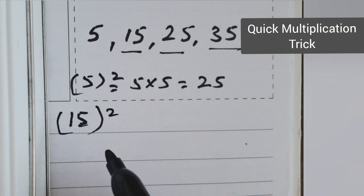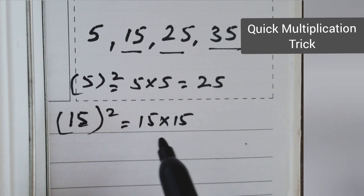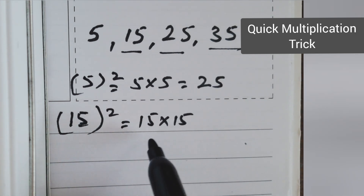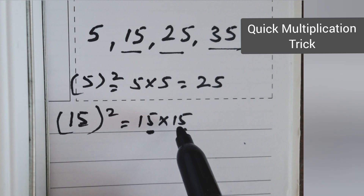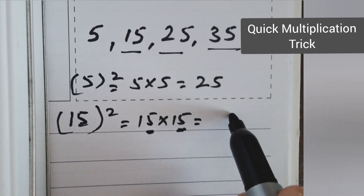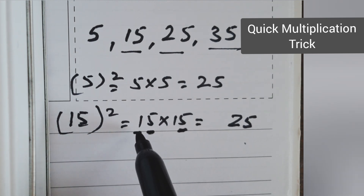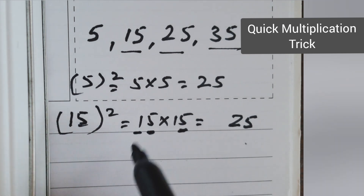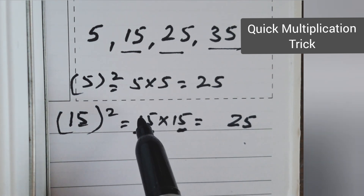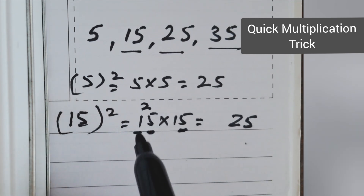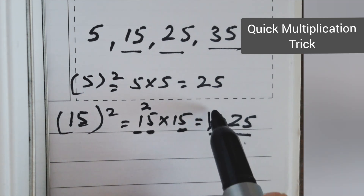The square of 15 means 15 multiplied by 15. Here's how we do this with quick multiplication. First, we multiply the last digit: 5 times 5 is 25. The next digit is 1, and we multiply 1 by the next number after it — after 1 comes 2 — so we multiply 1 with 2 to get 2. So the answer is 225.